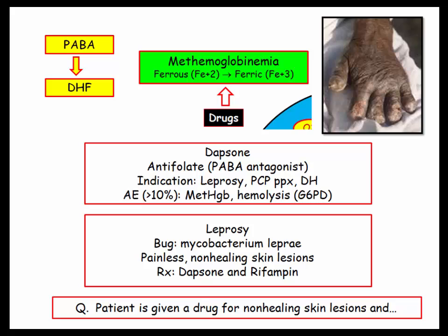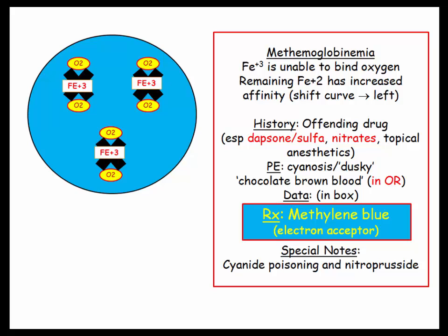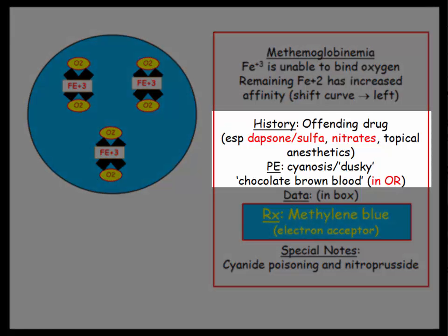They won't tell you the patient has leprosy; instead, they'll describe a patient with a non-healing skin lesion. A typical question will describe a patient given a drug for a non-healing skin lesion, then describe some manifestation of methemoglobinemia and expect you to know that the skin lesion was leprosy. They could also ask: patient with non-healing skin lesion given a drug that caused methemoglobinemia — what was the organism? Summary: ferric doesn't bind oxygen; it shifts the oxygen dissociation curve to the left, as with carboxyhemoglobin. Common agents include dapsone or sulfa, nitrates, and topical anesthetics.